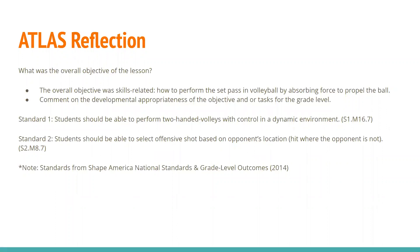Regarding the overall developmental appropriateness of the objective for the grade level: according to Shape America standards, standard one states students should be able to perform two-handed volleys with control in a dynamic environment. Standard two states students should select offensive shots based on the opponent's location — hit where the opponent is not. According to the standards, students in this class should have already developed the bump pass, the underhand shot, and the set pass, the overhand shot, in earlier grades. Therefore, they should be able to participate in small-sided games in seventh grade.